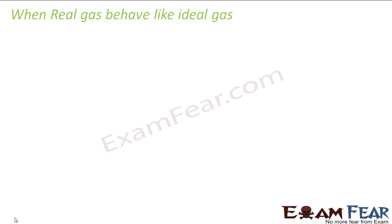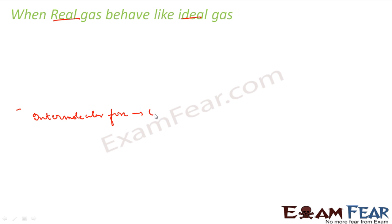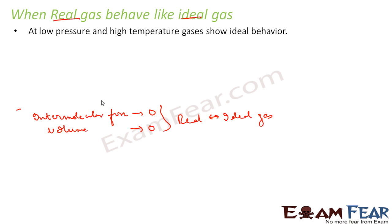Now the question is: when does real gas behave like ideal gas? We said real gas behaves like ideal gas under some conditions. For a real gas to behave like ideal gas, the intermolecular force should be almost zero and the volume should also tend to zero. If I satisfy these two conditions, my real gas will also behave like ideal gas.